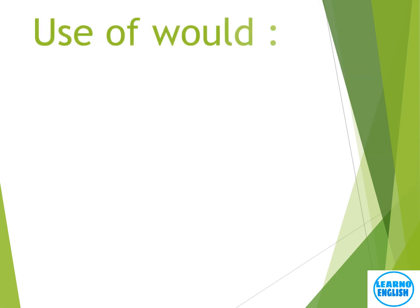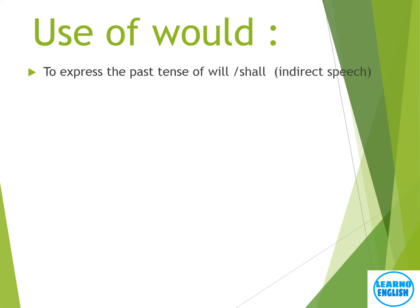अब हम लोग 'would' का प्रयोग देखेंगे। Narration पढ़ाते वक्त मैंने बताया था कि जहाँ कहीं भी direct speech में 'will' हो, हम लोग अक्सर उसको 'would' में बदल देते हैं — narration के rule के हिसाब से। 'Shall' का भी कभी-कभी past form में हम 'would' का प्रयोग कर देते हैं। Will का past tense 'would' होता ही है, जैसे: 'He said that he would kick him.'